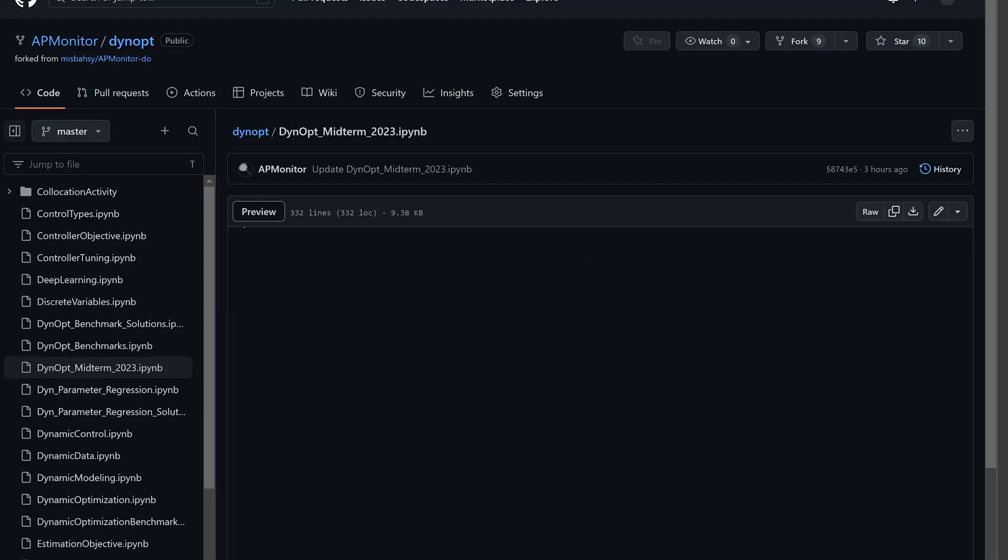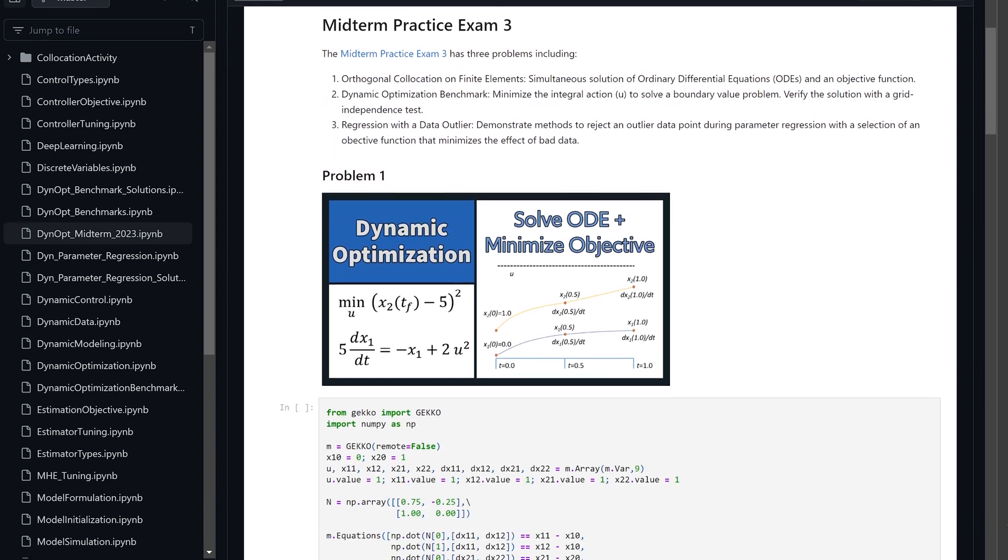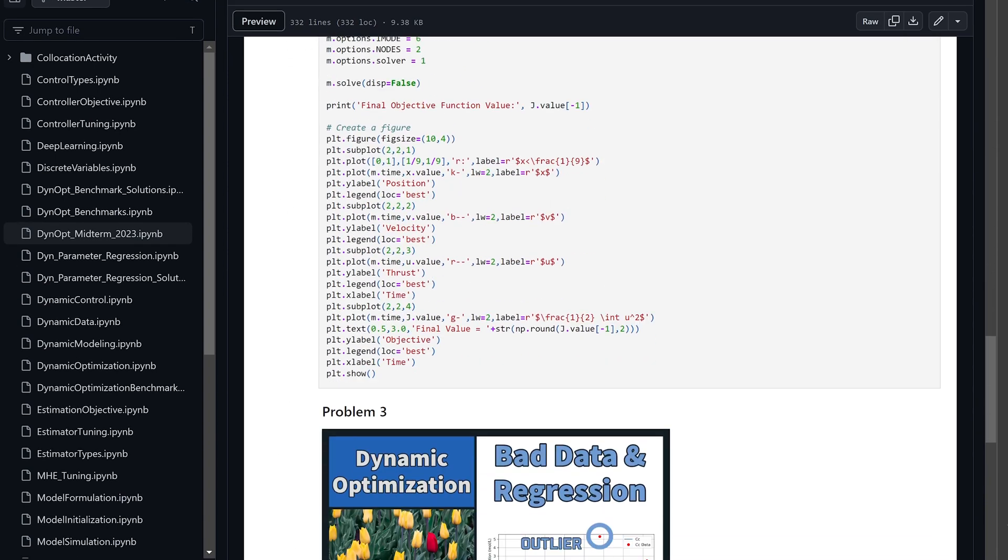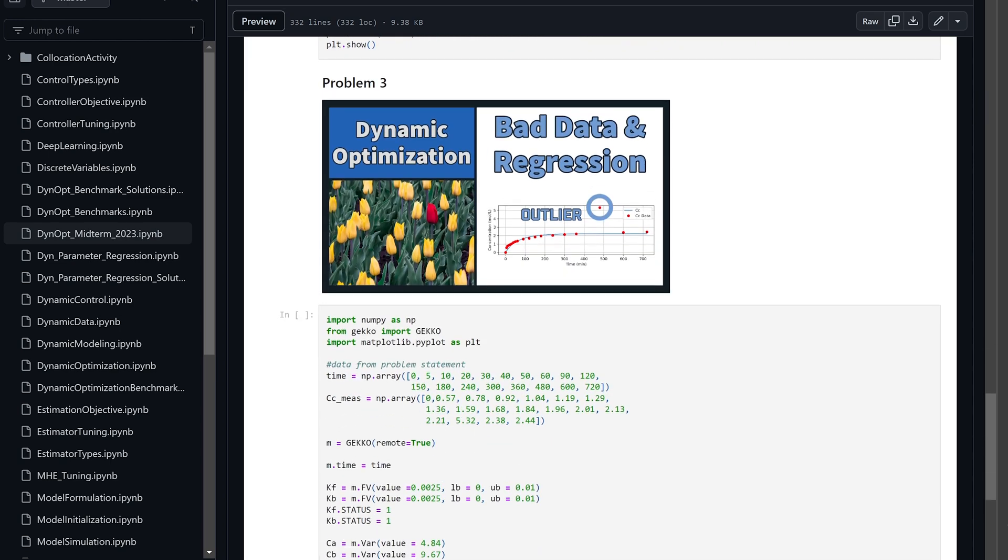And then if you want to go to the GitHub link there, it also has the Jupyter notebook as the source. All right. And you can go down to problem number three. You need to download this notebook and then open it up in your own environment.